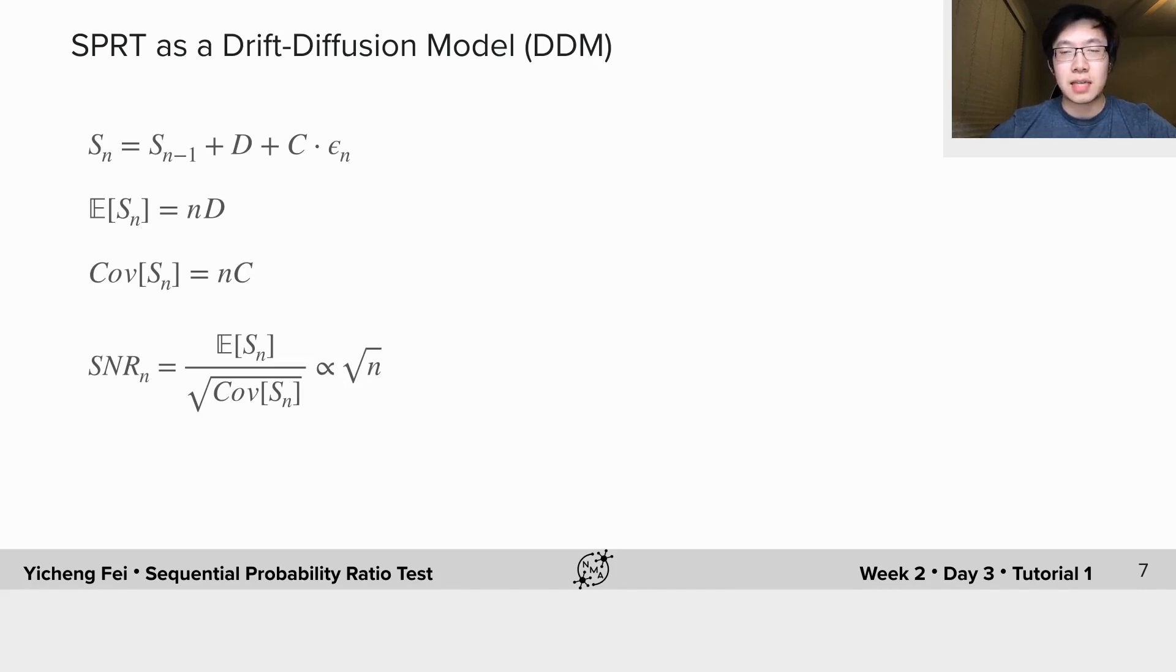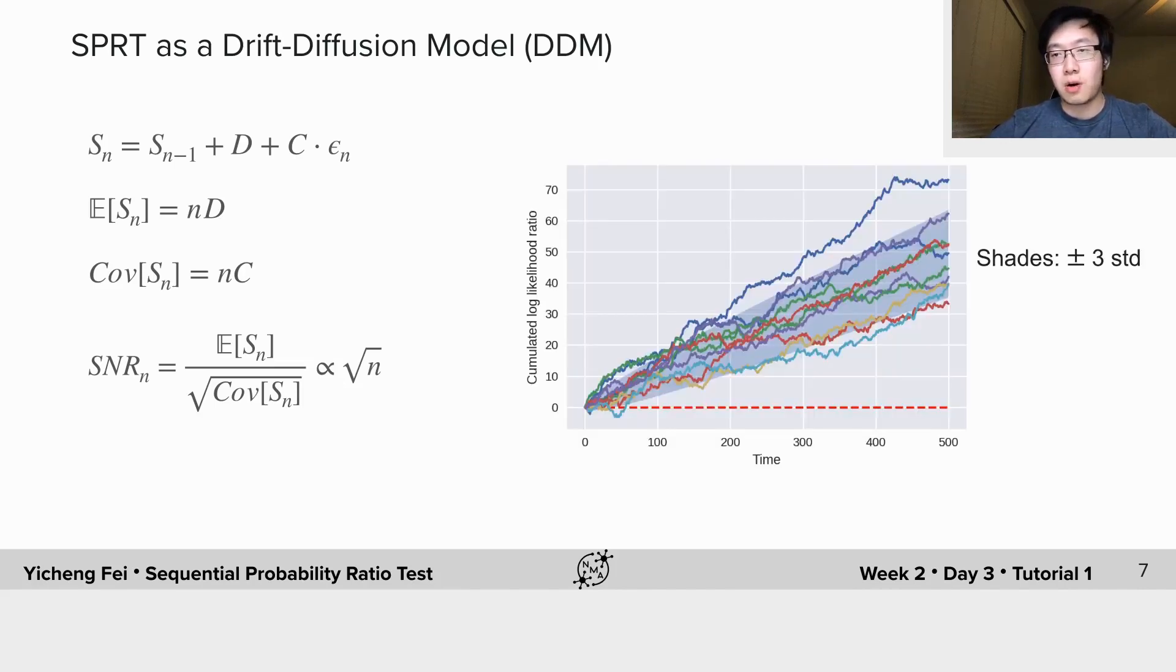This means that in this model, the more data you see, the more accurate decision you will make, which is consistent with our intuition.